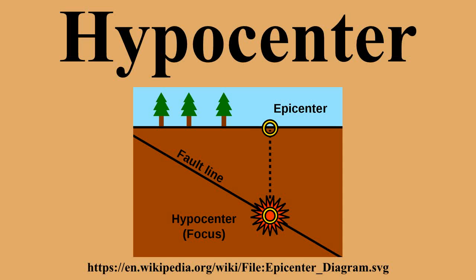An earthquake's hypocenter is the position where the strain energy stored in the rock is first released, marking the point where the fault begins to rupture. This occurs directly beneath the epicenter at a distance known as the focal or hypocentral depth. The focal depth can be calculated from measurements based on seismic wave phenomena.